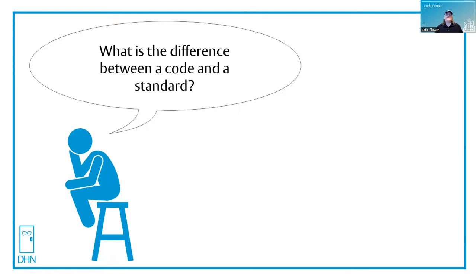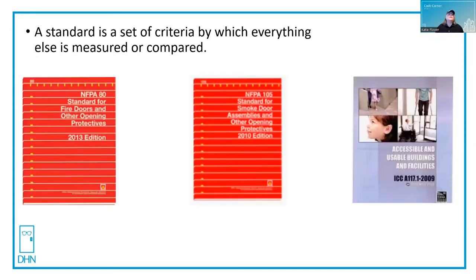That's a great question, and one I get very often. A standard is a set of criteria by which everything else is measured or compared. We use many standards in this industry. One of them is NFPA 80, the standard for fire doors and other opening protectives. The standard doesn't tell me where I need to use a fire door or what the rating needs to be, but it does tell me if you need a fire door, it needs to look like this and act like this, and the hardware requirements are as follows.